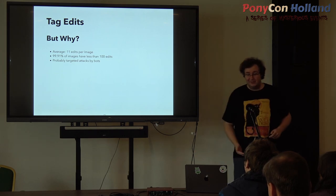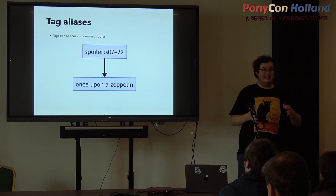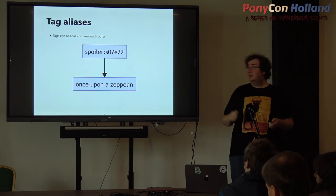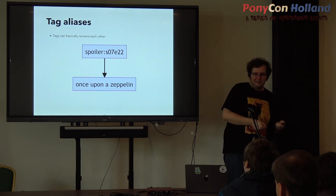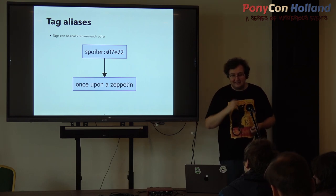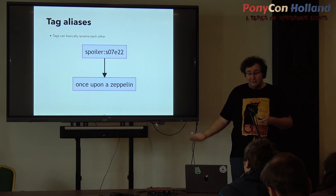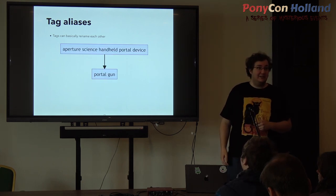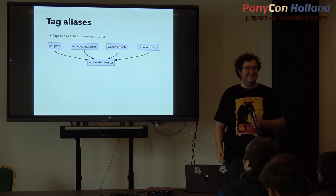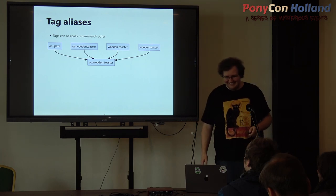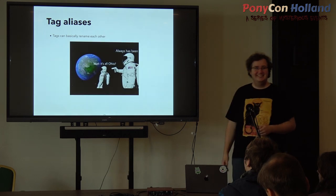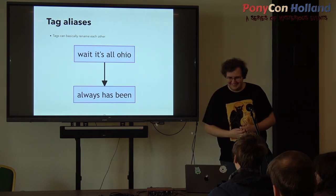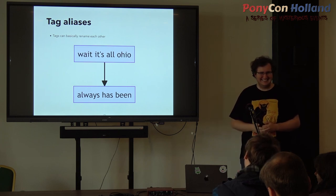So talking about tags, I also would like to talk about tag aliases, which is basically one tag can more or less rename another. So if you look for one of them, you will find all of the content tagged the other way. This is for example used for all of the spoiler tags and all of the episode tags also have the title of the episode. It can be used to correct the spelling of humor. It can be used to properly name the portal gun. It can be used if artists have a little bit of an identity crisis. Or it can be used for the most important thing: wait, it's all Ohio? Always has been.